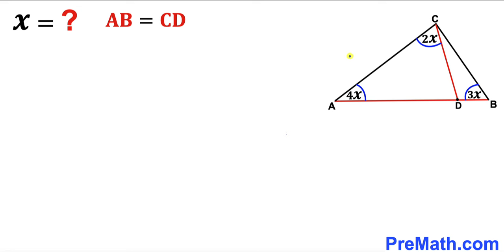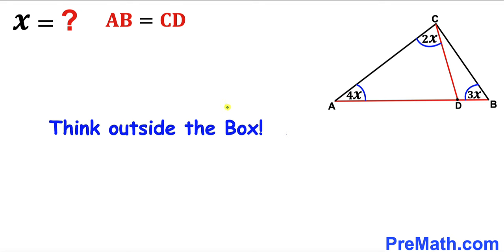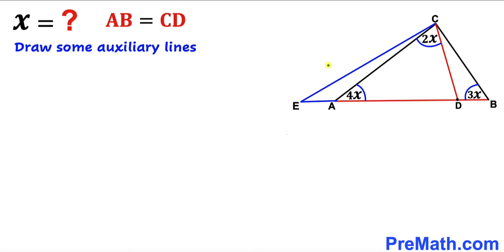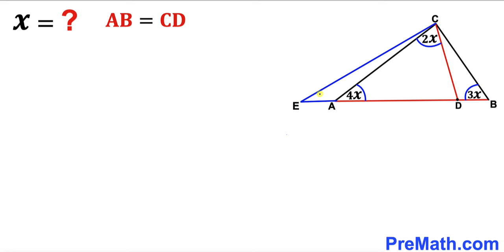Now let's get started with our solution. Since we have been given only these three angles and AB equal to CD, we are going to think outside the box and draw some auxiliary lines. I have extended line AD all the way to point E, and then connected point E with vertex C, such that we assume angle AEC is 3x — the same as angle CBD, so they are congruent.